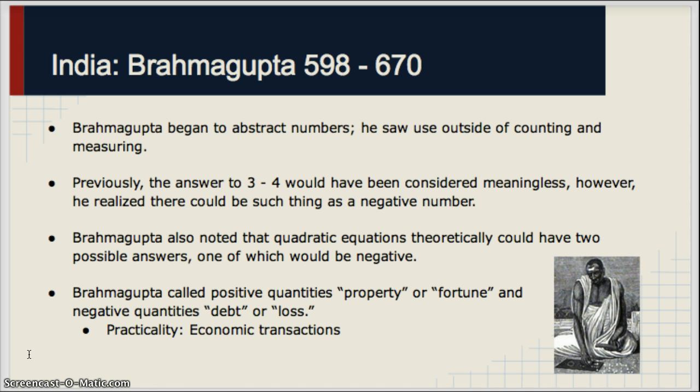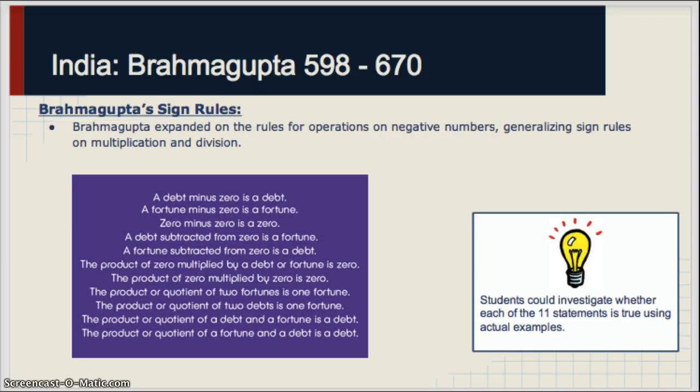Brahmagupta, like the Chinese, his original experimentation with negative numbers was economically driven, this practicality in everyday life. So he referred to positive quantities as property or fortune, and negative quantities as debt or loss. And so using those words, he wrote 11 statements for sign rules, or rules about how you would compute with given quantities. He actually included sign rules with multiplication and division as well, which the Chinese did not. So we can see these 11 statements here, and they're pretty comprehensive. Just a thought would be in practice to have students investigate these statements—can you prove that they're true? And it would be interesting for them to learn the language that was used in that time.